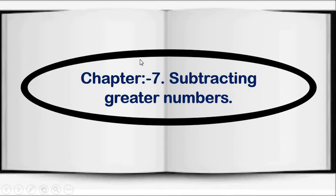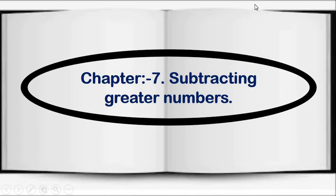Sit straight everyone, make your back straight. You all are ready to learn? First of all, take all the essential stationery which you need to write. As I told you, we are going to cover chapter number 7 and you all have to copy it in your rough book. If your fair book is incomplete then you can complete it in your fair book. Write today's date and day in this corner.